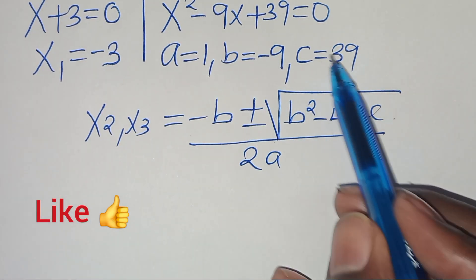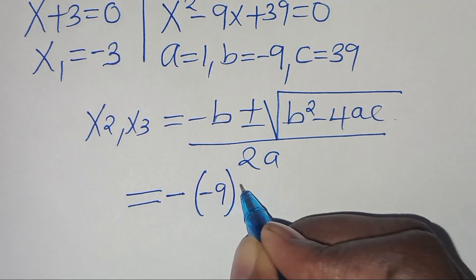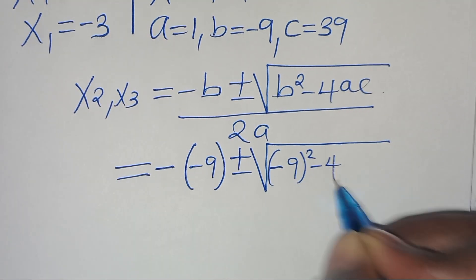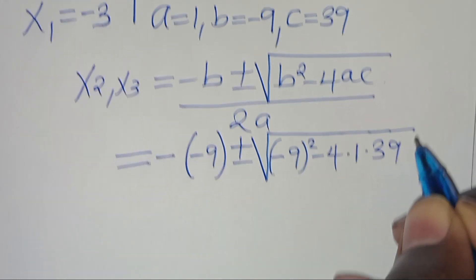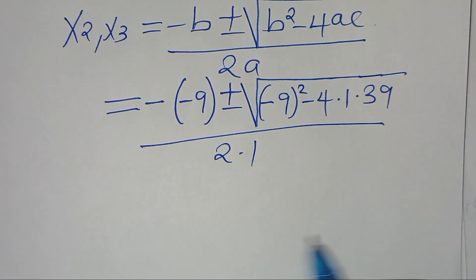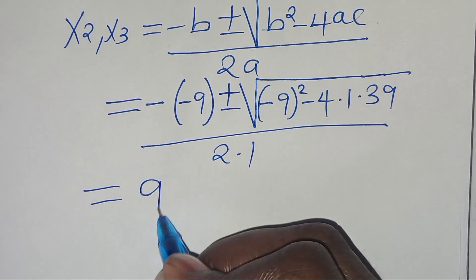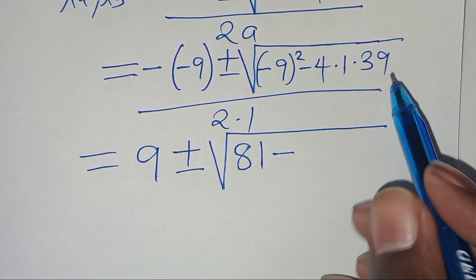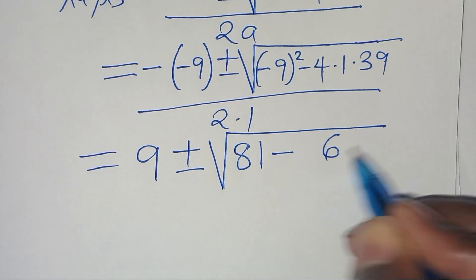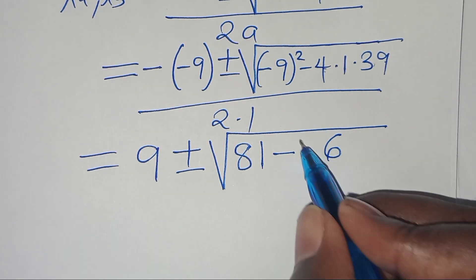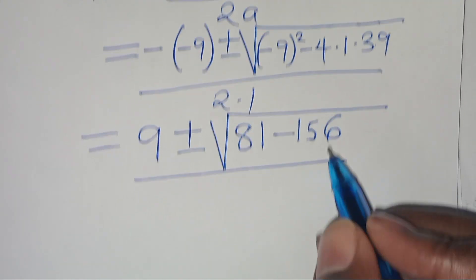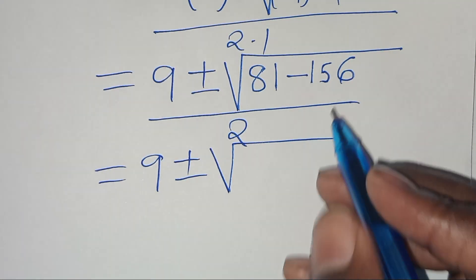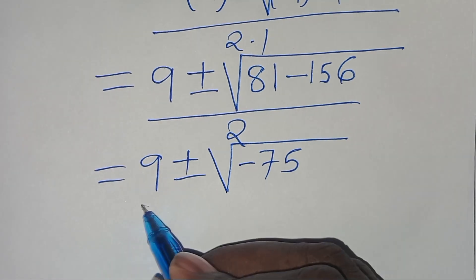Substituting into the quadratic formula: minus(minus 9) plus or minus the square root of (minus 9)^2 minus 4 times 1 times 39, all over 2 times 1. This gives 9 plus or minus the square root of 81 minus 156, which is the square root of minus 75, over 2.